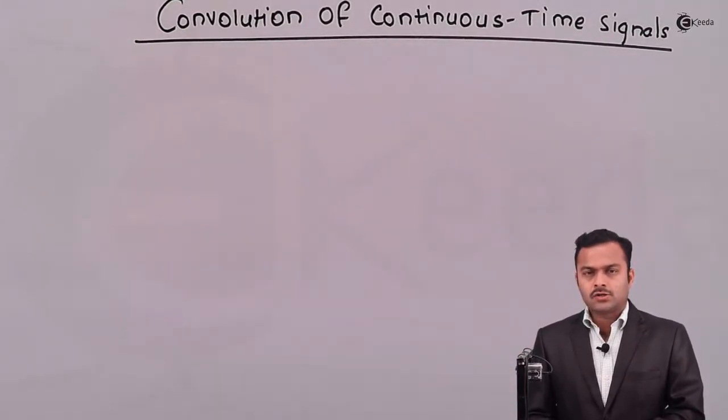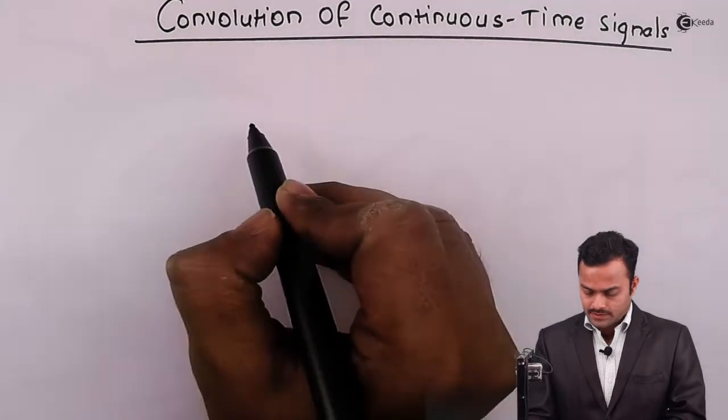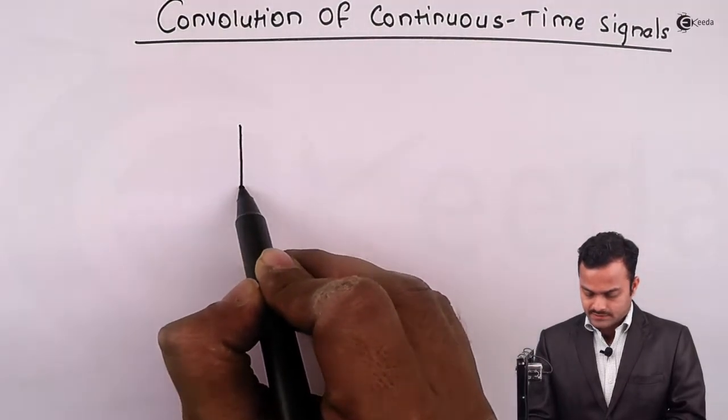In case of a system, in order to get output, I should know impulse response and input signal. So, this mathematically can be represented like this.